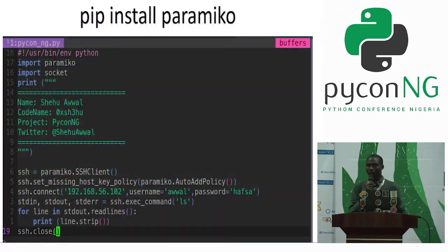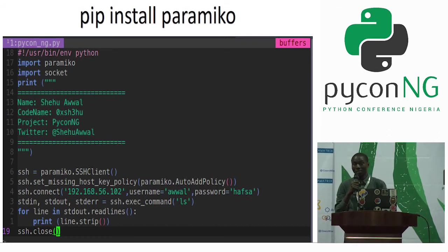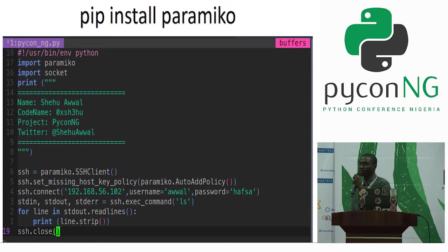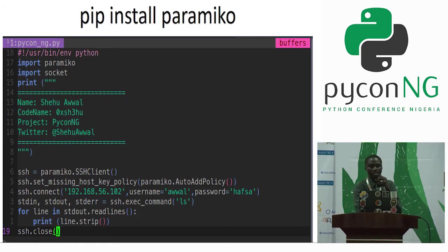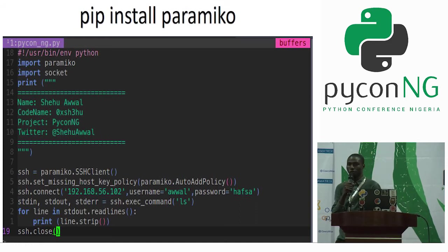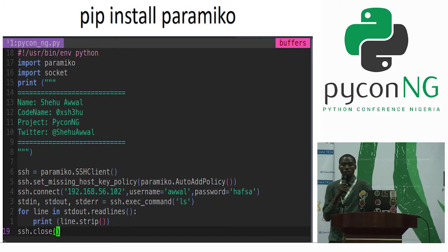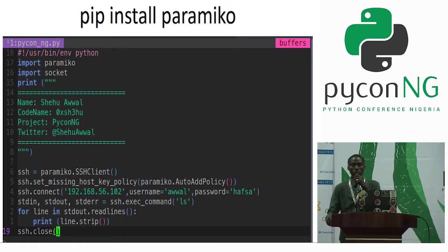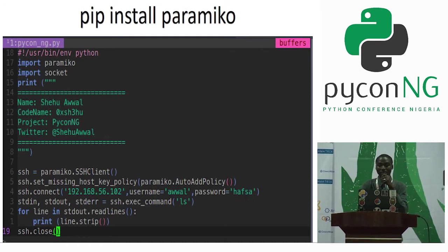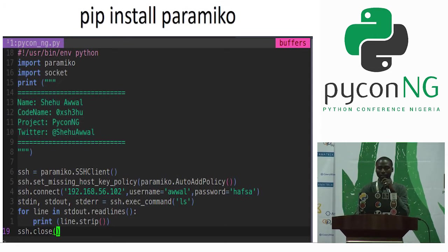There's another one also called Paramiko. Paramiko can be used — just like pexpect — to automate SSH login, Secure Shell. This is the one I wrote using Paramiko. I imported Paramiko, then import socket. The SSH client is paramiko.SSHClient(), and other things like set_missing_host_key_policy for auto-adding — for example, if you connect your system to a new SSH system, it will ask you to add this host to your known hosts — yes or no. With set_missing_host_key_policy, it will automatically add this for you.